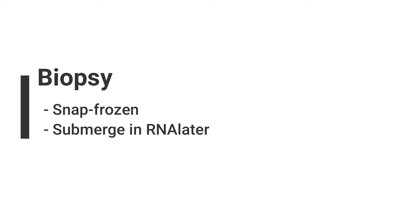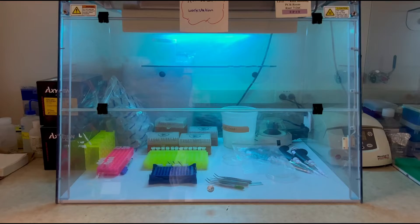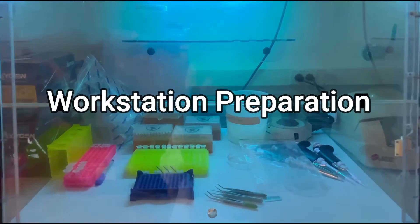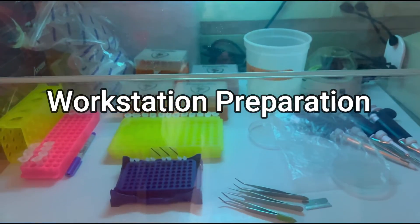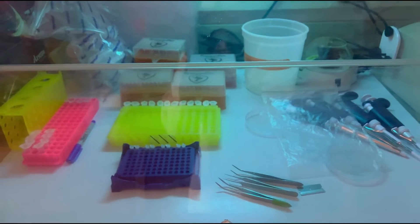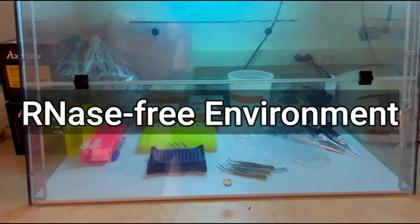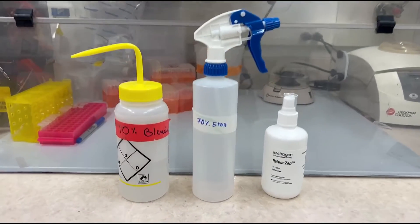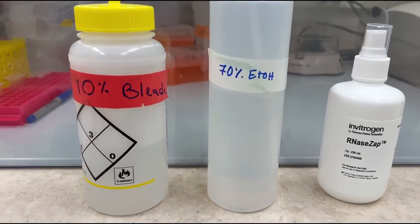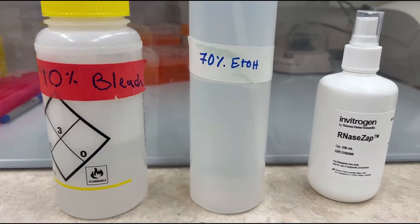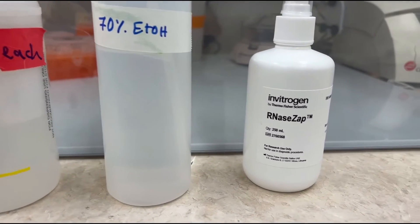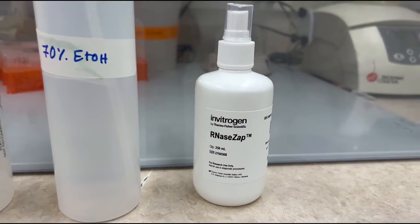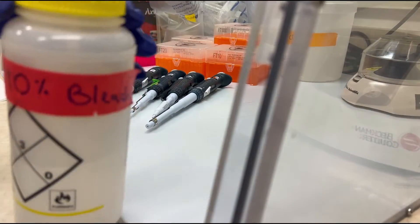With our tissue samples properly collected and preserved, let's move on to preparing the workstation. First things first, let's ensure your workstation is in top-notch shape for RNA extraction. To do so, wipe down your workstation and the pipettes with a sequence of cleaning agents: start with 10% bleach, followed by 70% ethanol, and finish off with RNA zap.